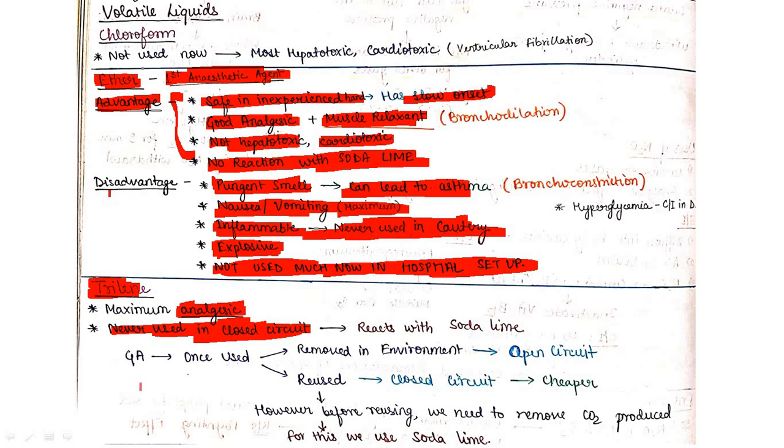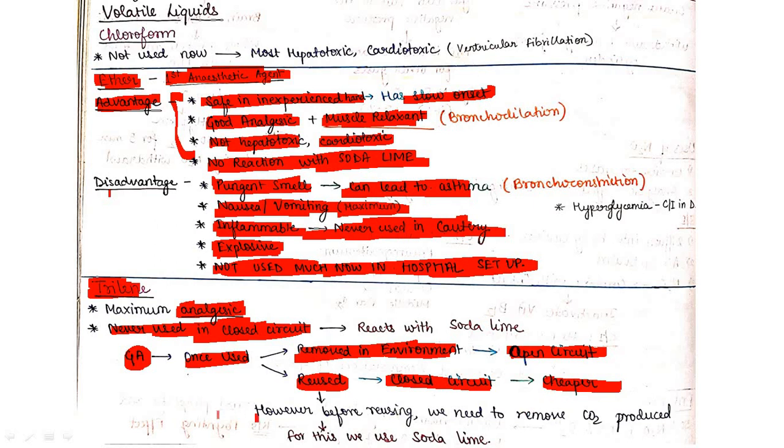General anesthetic once used and removed to environment - that's example of open circuit. When it is reused, that's closed circuit with cheaper cost. Before reusing we need to remove CO2 produced using soda lime. If any anesthetic reacts with soda lime, it cannot be reused. Those that don't react with soda lime can be used in closed circuit.